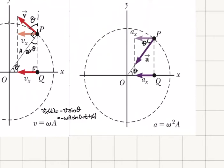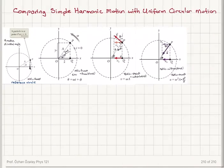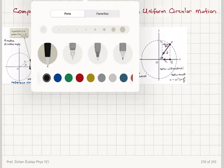Now I go to acceleration. If this is the angle theta with the x-axis, then the centripetal acceleration vector also makes angle theta with the x-axis. The acceleration on the x-axis at time t equals minus a cosine theta — that is the x-component. The acceleration in uniform circular motion is v squared over r, or omega squared times r, because v equals omega times A. So the acceleration on the x-axis as a function of time equals minus omega squared times A cosine(phi + omega*t).